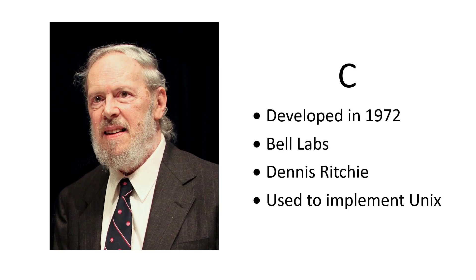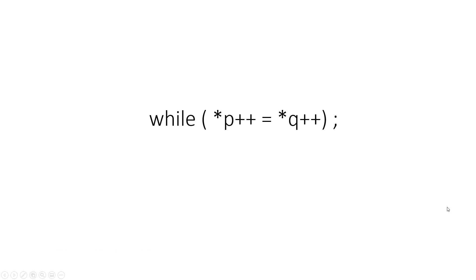When working in C, programmers really did need to be experts — they needed to write the most efficient possible code. Here's an example. Take a look at this one line of code and see if you can figure out what it does. These stars are pointer dereferences. If you've seen a pointer in a class somewhere, pause the video and see if you can figure out what this is doing.